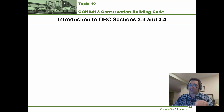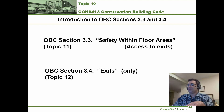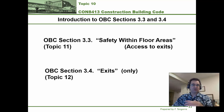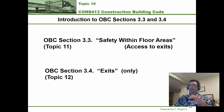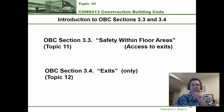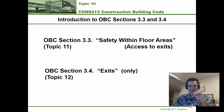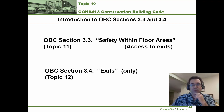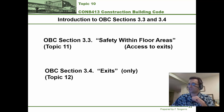Starting with the next topic, topic 11, we're going to dive deeper into safety within floor areas — basically what the building code requires for safety in Part 3 buildings everywhere up to but not including exits, and how to safely get to an exit. Then in topic 12, we're going to dive deeper into exits: once we're in an exit, what does Part 3 of the building code say an exit must be built as and what the requirements are.